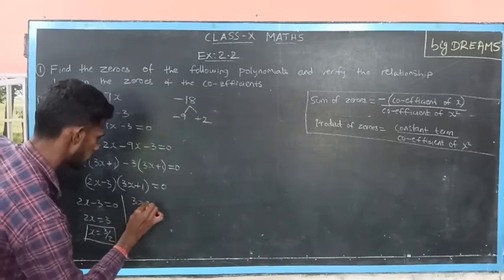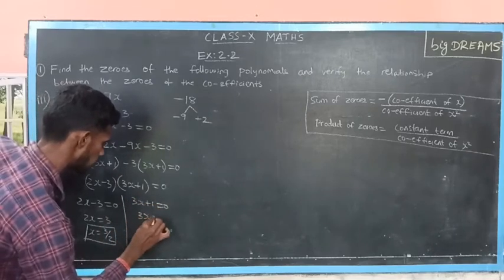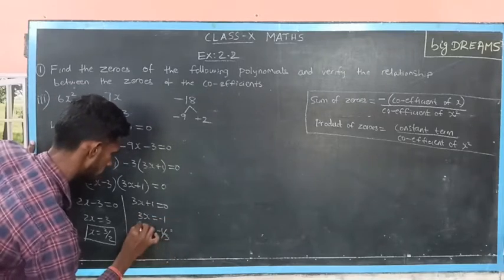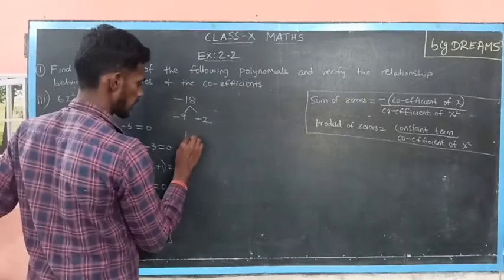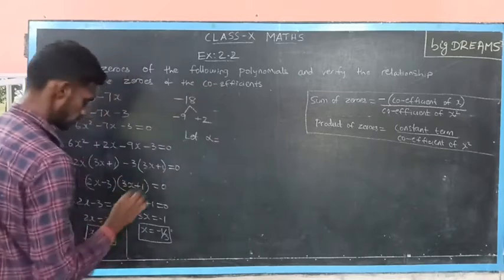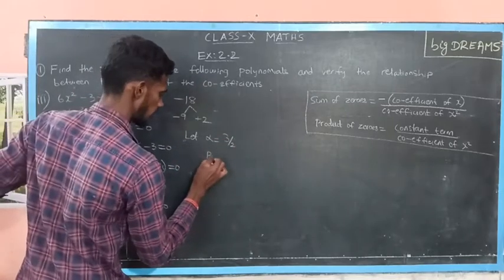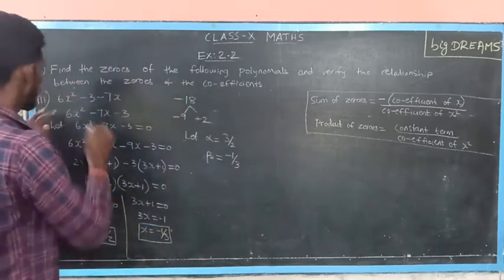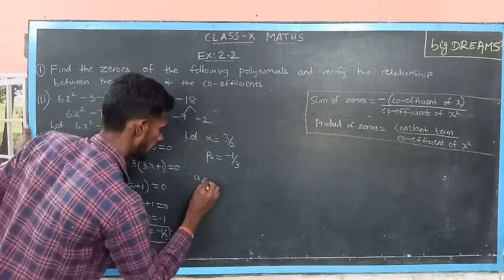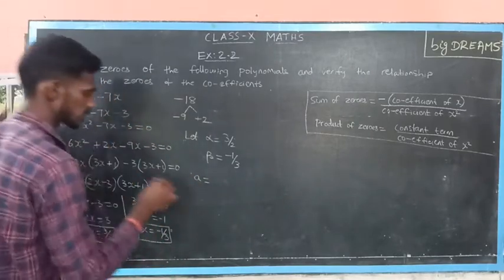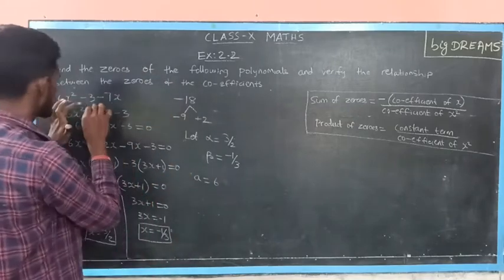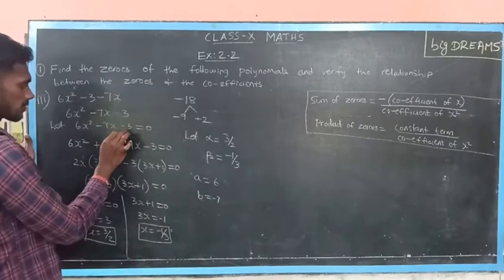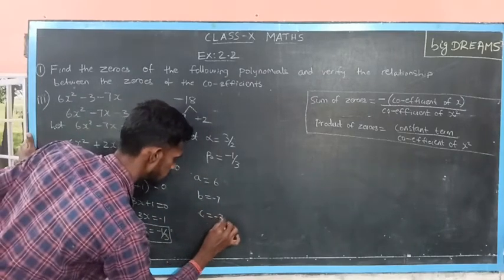Here, 3x plus 1 is equal to 0, so x is equal to minus 1 by 3, which is the other zero. So, let me substitute alpha is equal to 3 by 2 and beta is equal to minus 1 by 3. Then, comparing the given polynomial to standard form: a, the x squared coefficient, is 6; b, the x coefficient, is minus 7; and c, the constant term, is minus 3.